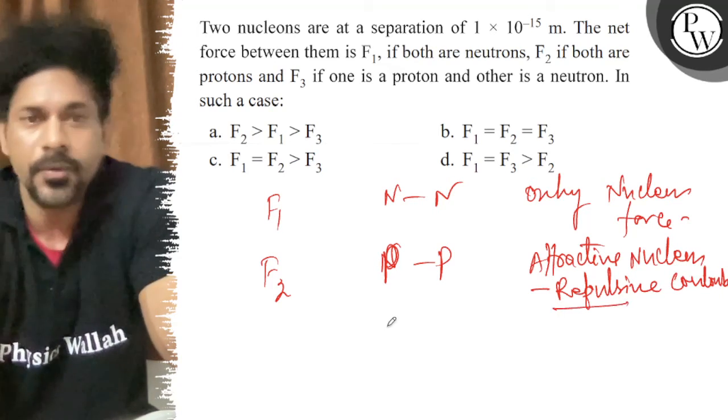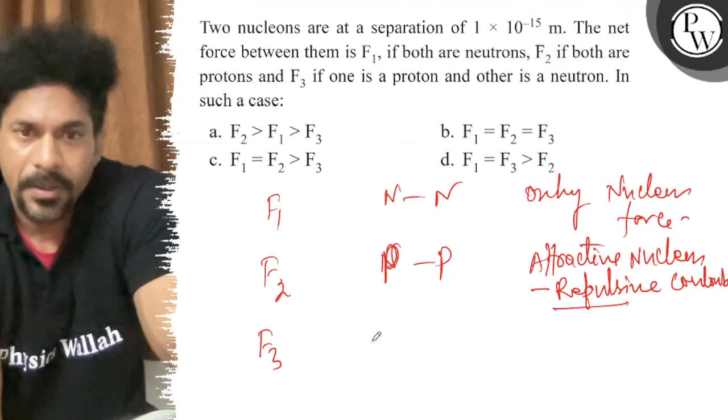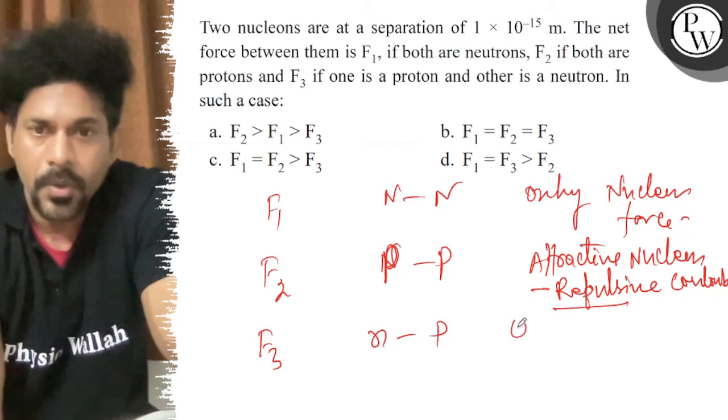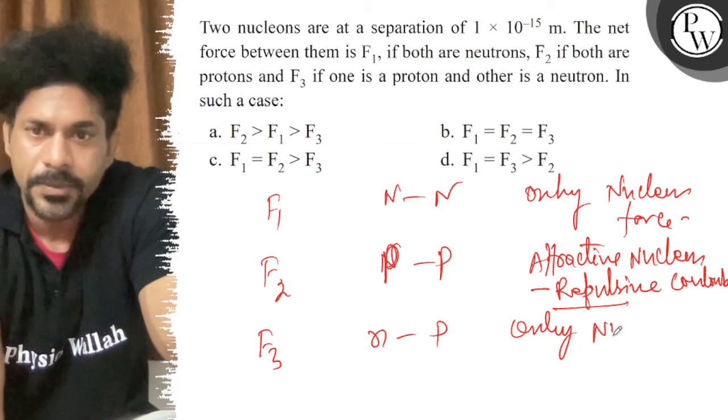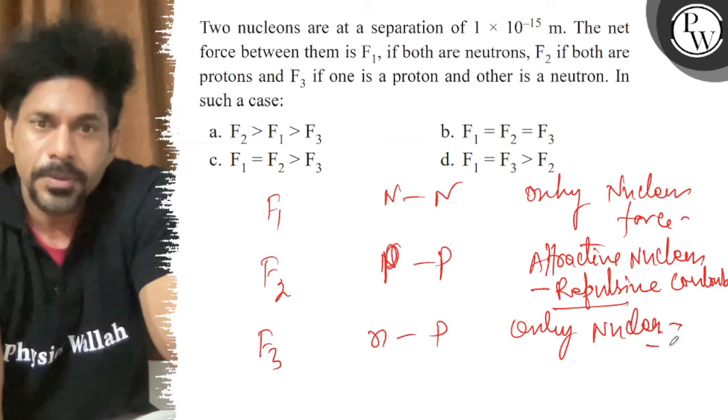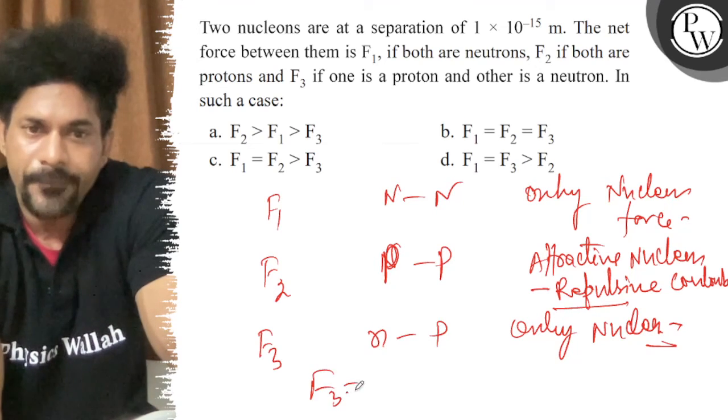Okay, so F2 if F1. F3, neutron-proton, only nuclear force. So F3 is equal to F1 and less than F2.